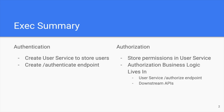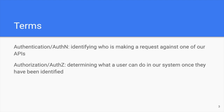For the broader talk, let's define some terms. Authentication, or AuthN, means identifying who's making a request against one of our APIs. Authorization, or AuthZ, means determining what a user can do in our system once they have been identified.